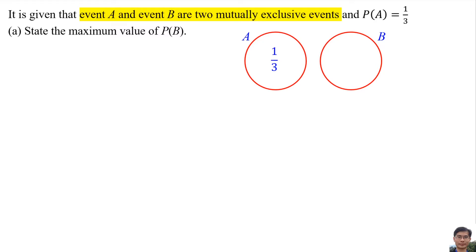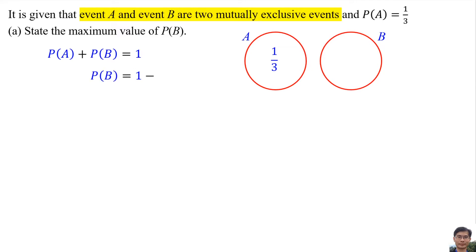Question A: State the maximum value of the probability of event B. Since event A and event B are two mutually exclusive events, the probability of event A plus the probability of event B is equal to 1. So the probability of event B is 1 minus 1 over 3, which gives the maximum value of probability of event B as 2 over 3.